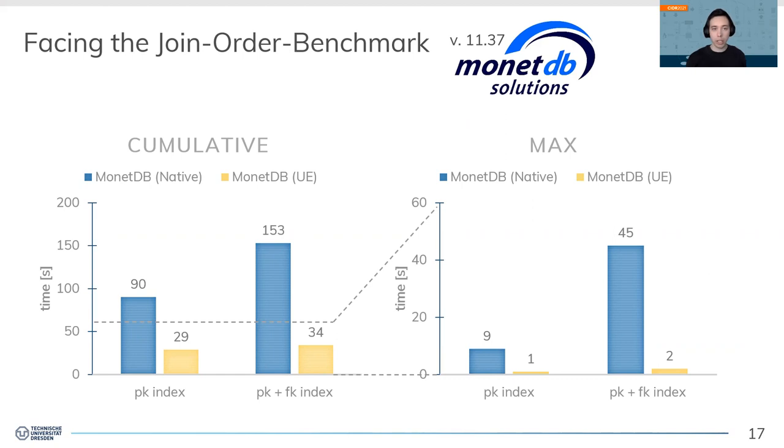First, for MonetDB: on the left-hand side, you'll see the cumulative execution time to execute all 113 Join Order Benchmark queries in comparison to MonetDB's default join ordering. The figure already reveals a tremendous speedup of query execution times for all queries, no matter the index configuration. More interesting, if you look at the right-hand side, you see the execution time for the longest-running query of both approaches, which reveals that we can circumvent very long-running queries. Our join order takes at most two seconds, while the default MonetDB join ordering takes up to 45 seconds.